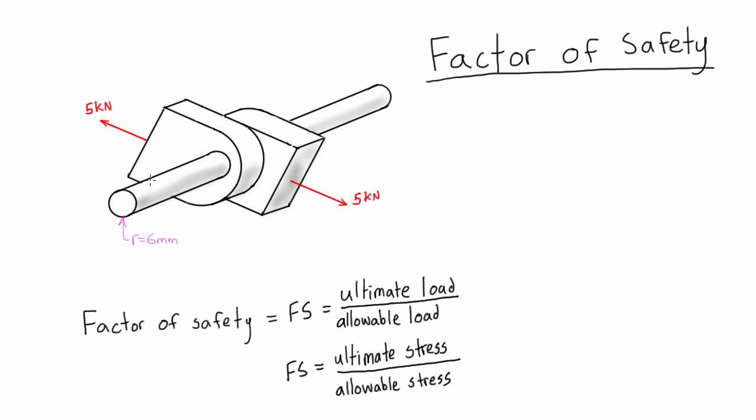So let's take a look here at this example. And let's say that you're told that this rod here has an ultimate shearing stress of, let's say, 100 megapascals. In mechanics and materials, you'll always be given the ultimate stresses if you need them for the problem. Because these are determined actually from laboratory experiments and have to do with the properties of the material themselves.